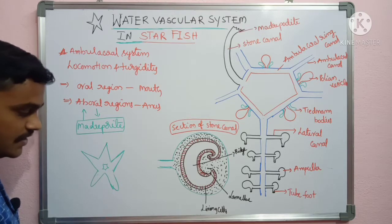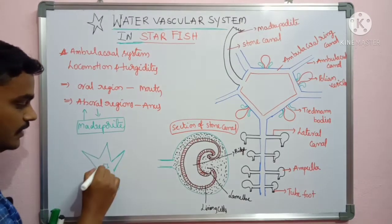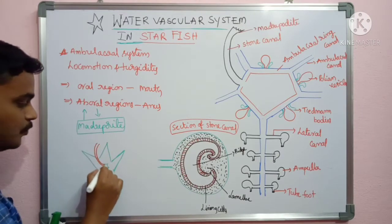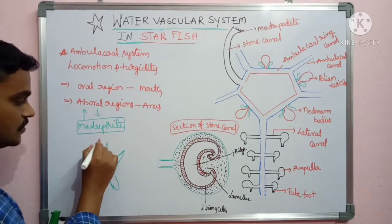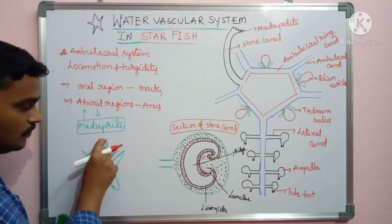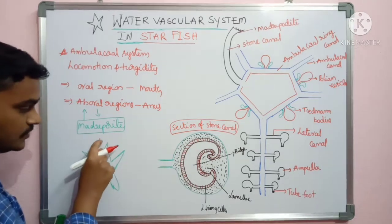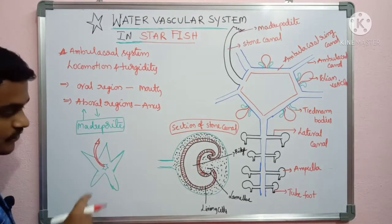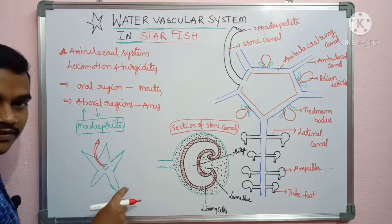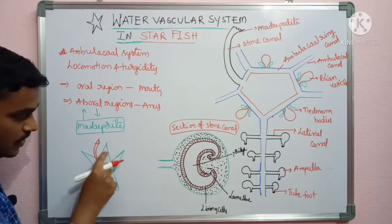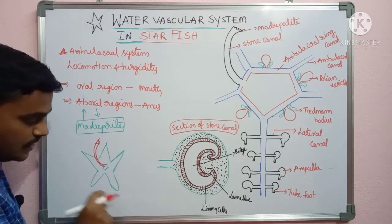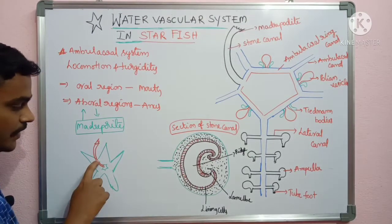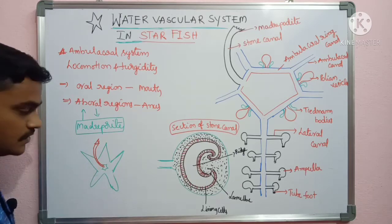The central disk in the aboral region contains one madriporite. Water can enter through the madriporite into the body. The madriporite is present in between two arms.